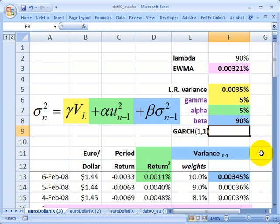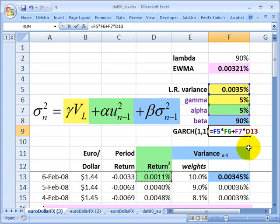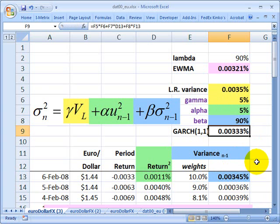I can now implement this GARCH(1,1) model by multiplying the long run variance times gamma. I'm giving it a weight. Then I'm going to add alpha, which is the weight multiplied by yesterday's squared return. Then I'm going to add beta, which is the weight multiplied by yesterday's variance. That's all I need to do. I hit enter. You can see that gives me the GARCH(1,1) estimate.